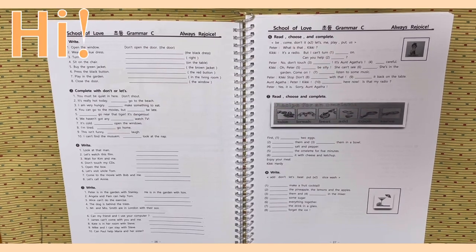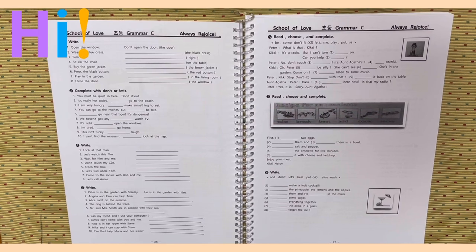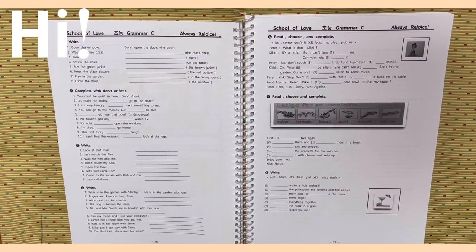Wear the blue dress. Turn left. Sit on the chair. Buy the green jacket. Press the black button. Play in the garden. Close the door.